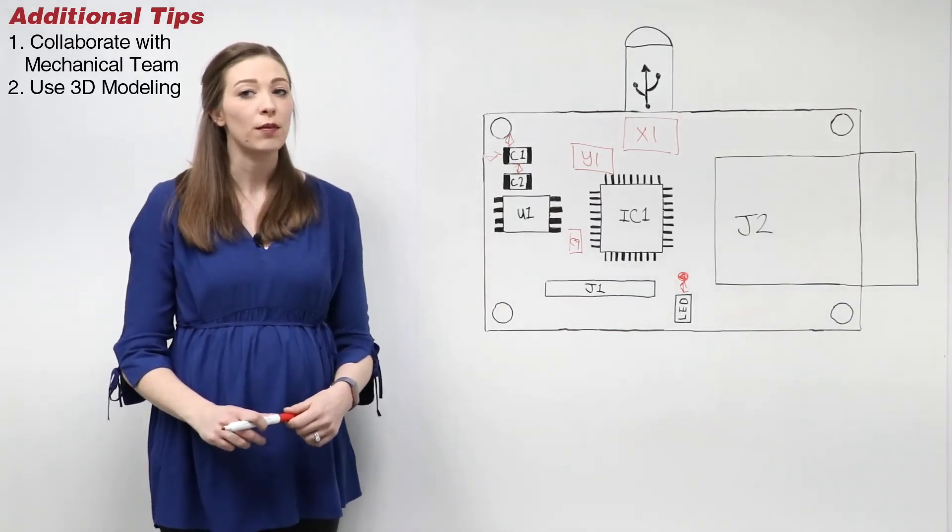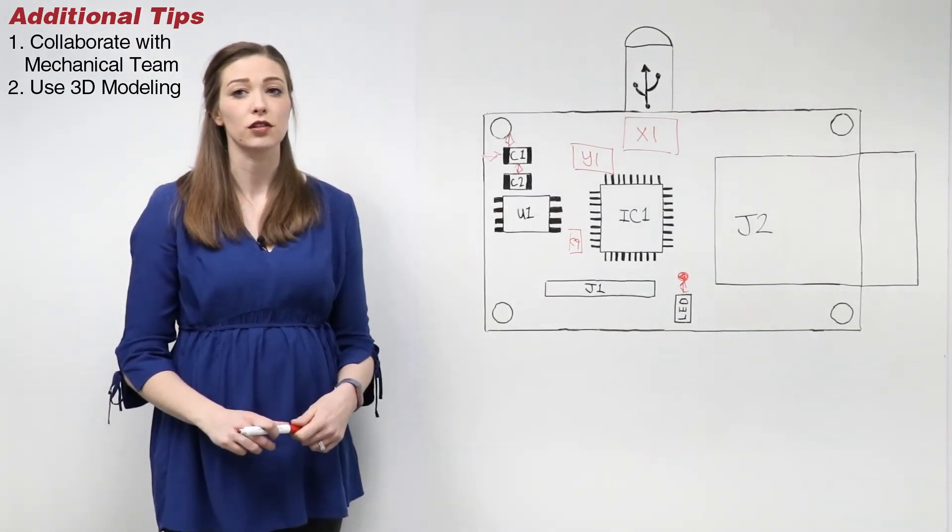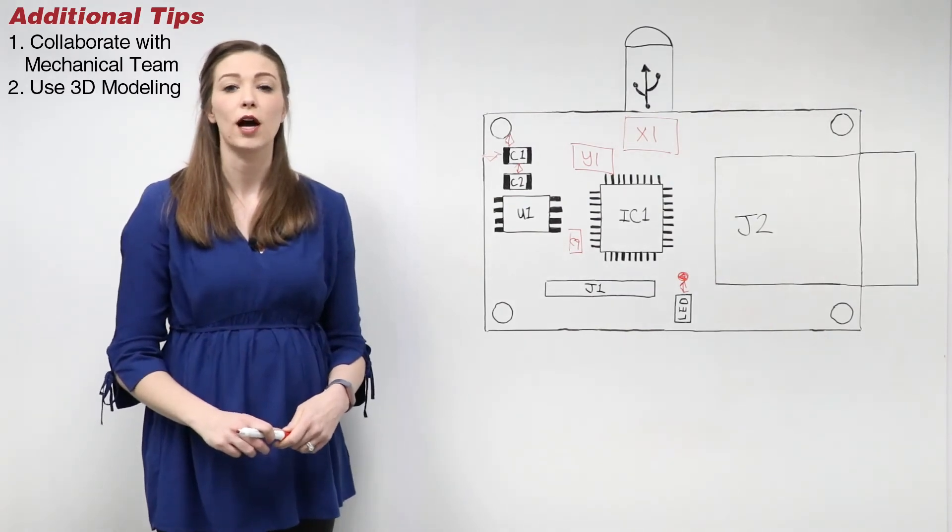Two, use 3D modeling tools. Some PCB software includes 3D modeling for components and enclosures. These cross-checking tools will help reduce assembly errors.